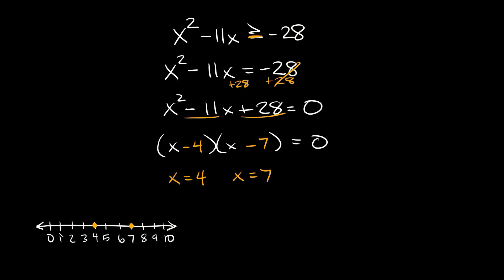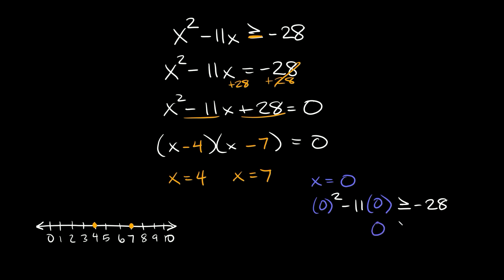We test three points. In the left region, let's test zero. Plugging zero into the original inequality: 0 squared minus 11 times 0 is greater than or equal to negative 28. The left side is just 0, so we get 0 is greater than or equal to negative 28. That's true — zero is definitely bigger than negative 28. So this region has real solutions, and we shade it going toward negative infinity.